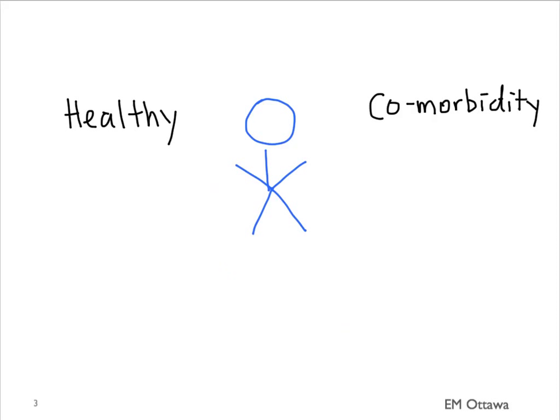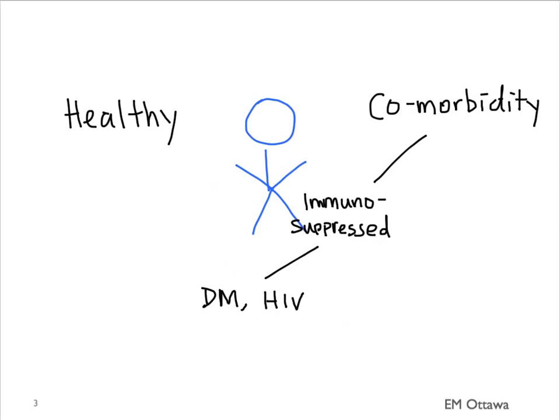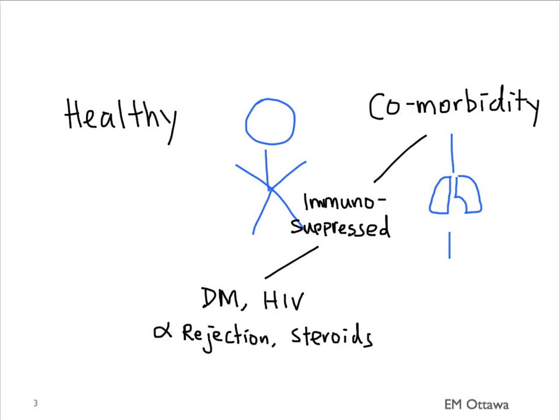Whether they're healthy or whether they have any comorbidities. The comorbidities are separated into conditions that make them more prone to infection. That can include a list of different conditions, such as diabetes and HIV infection. Medications include anti-rejection medications, steroids, and so on. Other comorbidities we care about also include existing lung problems, such as COPD and asthma.